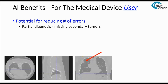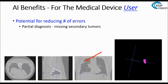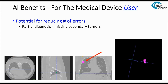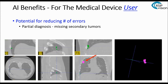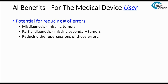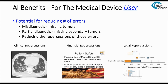Another example is partial diagnosis — missing secondary tumors. Looking at these photos, the red arrow emphasizes something suspicious that we might notice, but when we look at the segmentation, we see not only the big tumor but also two nodules hiding in the background. We zoom in and really get to know these findings. Reducing errors is very important because it also reduces the repercussions: the clinical repercussions, the financial repercussions, and oftentimes the legal repercussions as well.